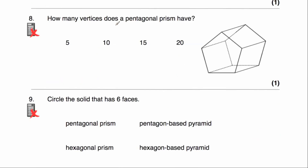Question number 8: how many vertices does a pentagonal prism have? A pentagonal prism has a constant cross-section of a pentagon. It has 5 vertices at the front and another 5 at the back — so counting: 1, 2, 3, 4, 5, 6, 7, 8, 9, 10 — there are 10 vertices altogether for the pentagonal prism.